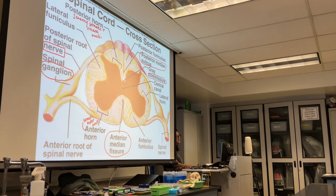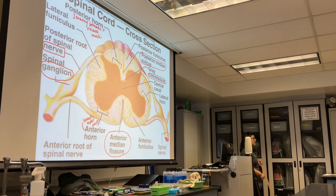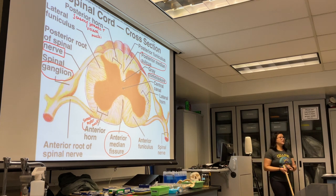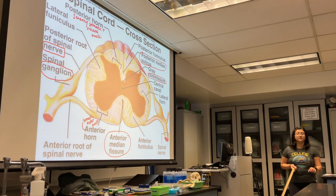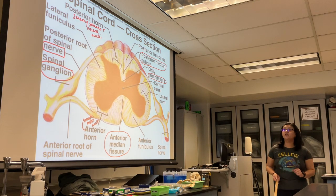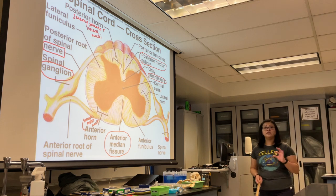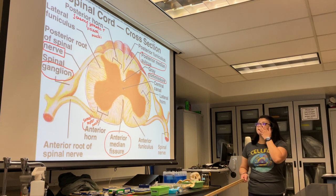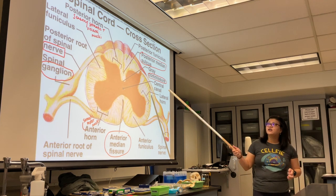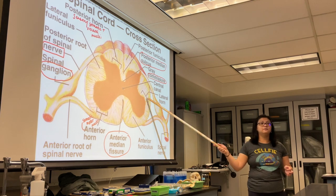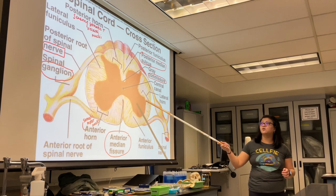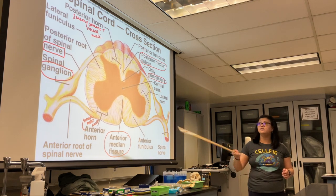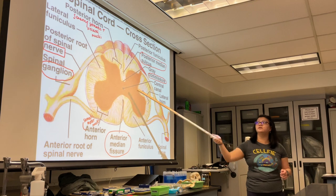You should know the spinal cord slide — it already showed up in your lectures. Notice how it's flipped compared to the brain: in the spinal cord, the middle is gray matter with horns, and the outside is white matter.